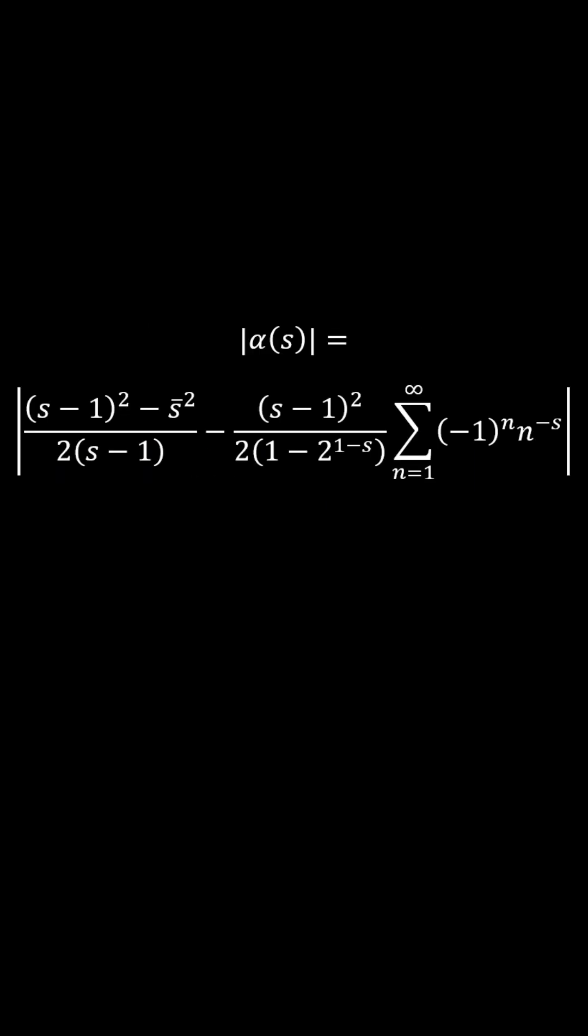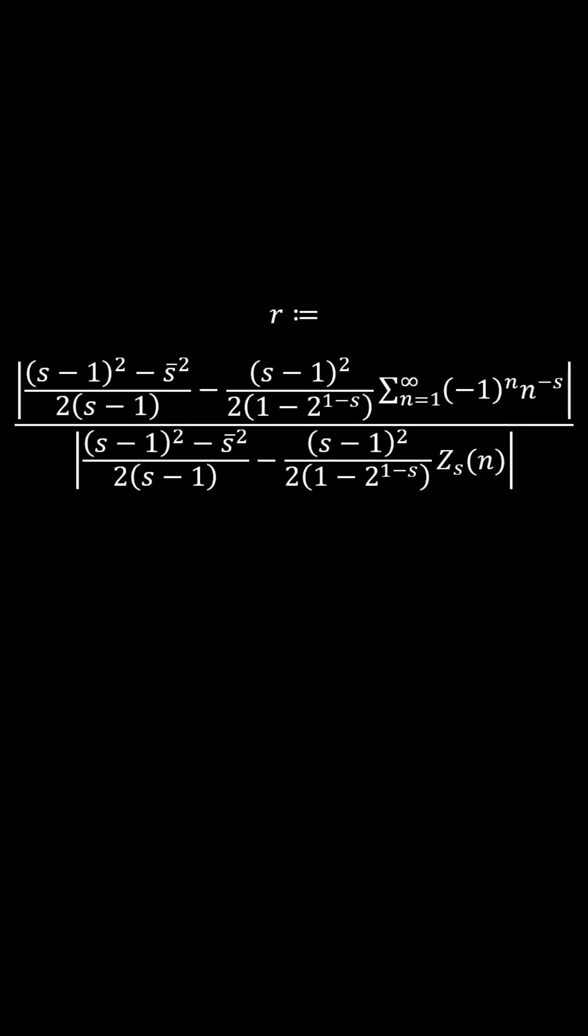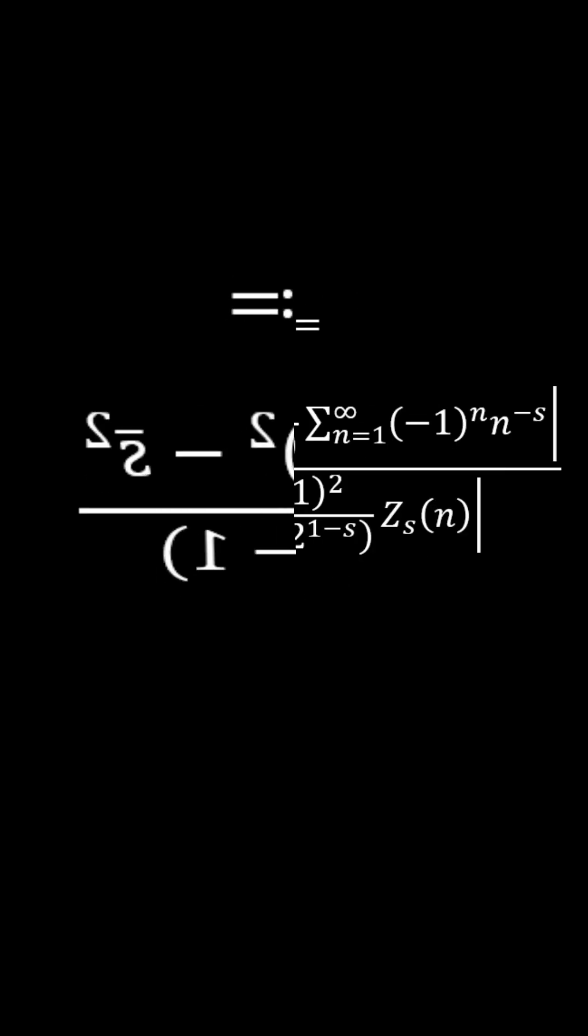Let the ratio of the absolute value of the infinite series definition of alpha over the absolute value of its sum function be defined as r. For simplification purposes, let the first term be k.